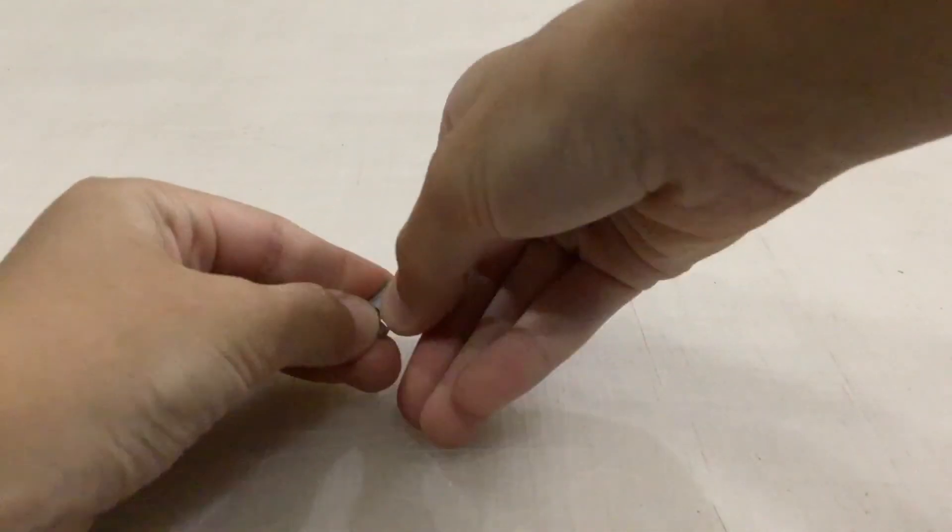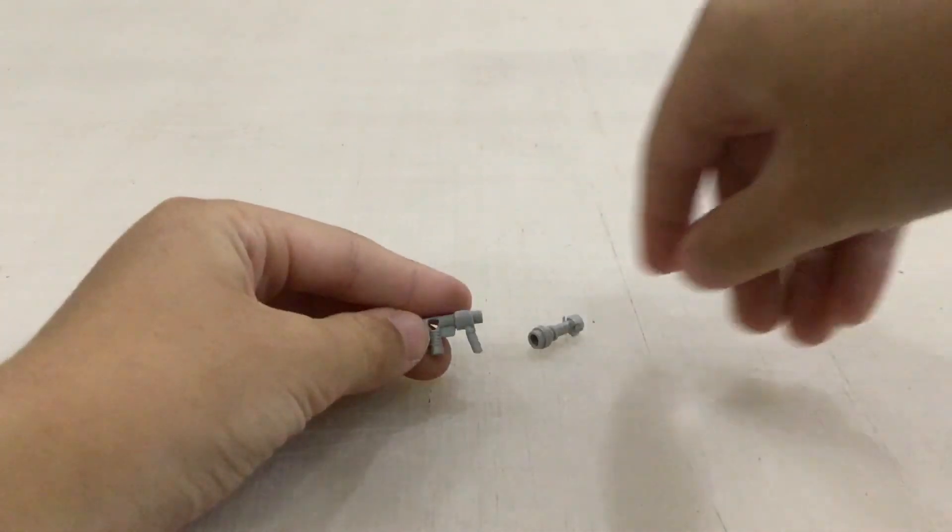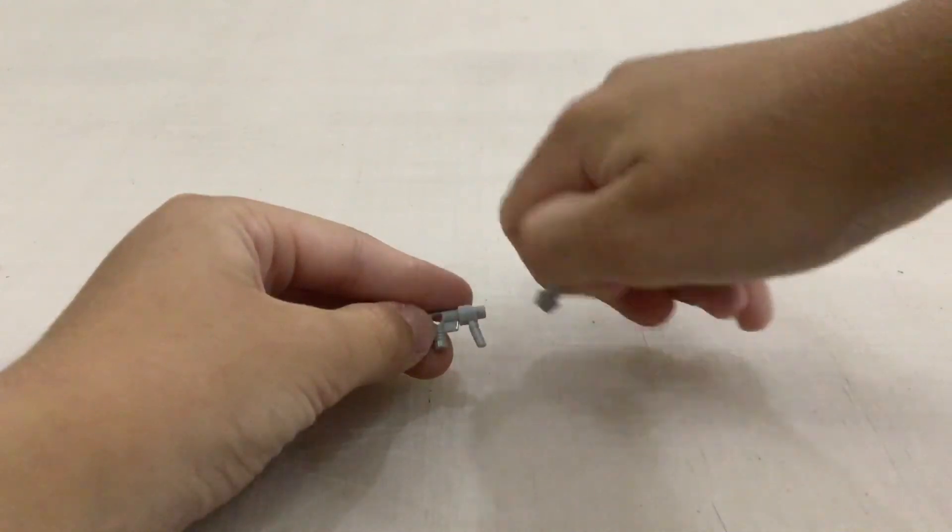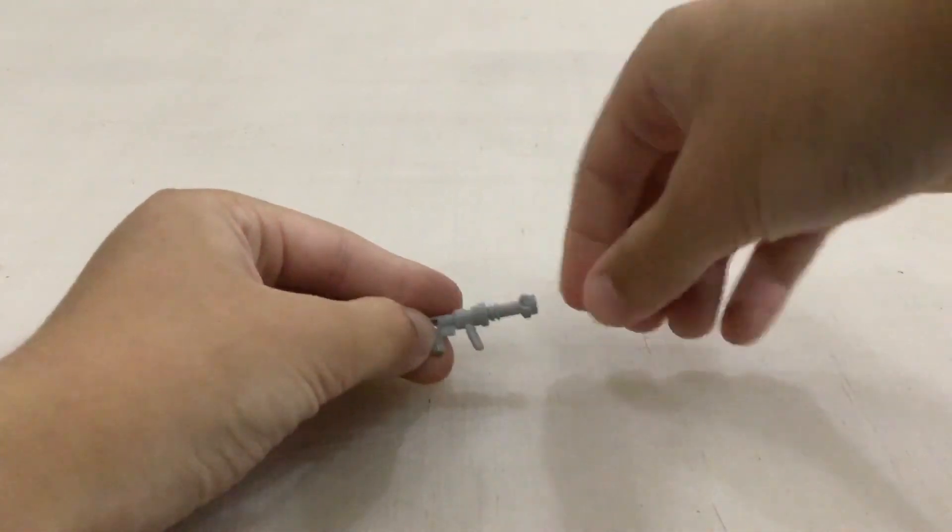And then you put the hand onto a gun like that just above the trigger, on the front of the trigger, and the lightsaber handle goes on the front.